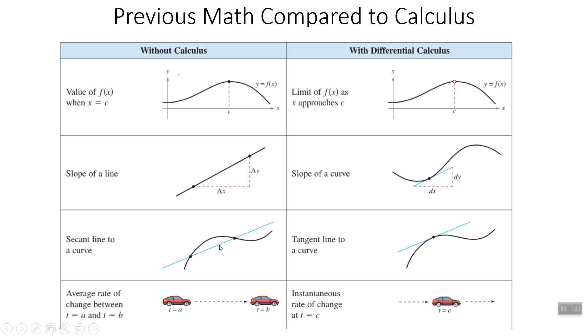We did secant lines before. You might not have called them secant lines, but if it was through two points and you found the slope, that's technically a secant line. Before, when you found the rate of change, you took the distance something traveled and divided it by the time. That gave you the average rate of change.